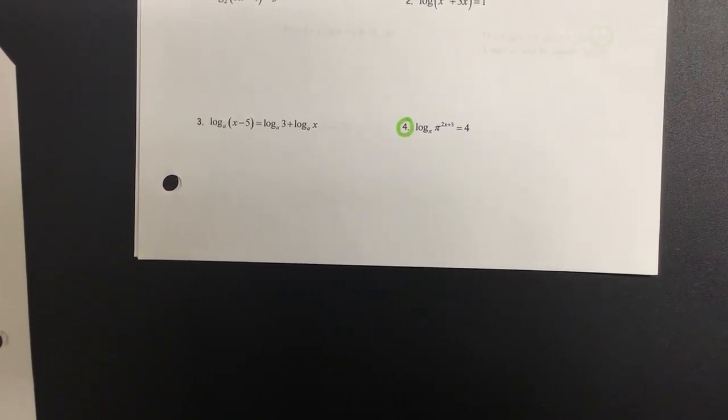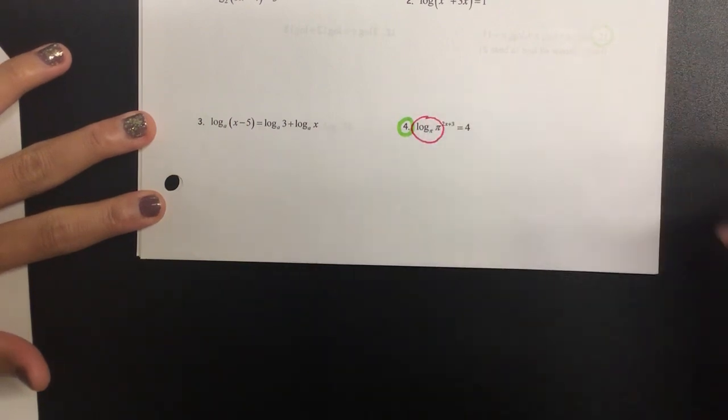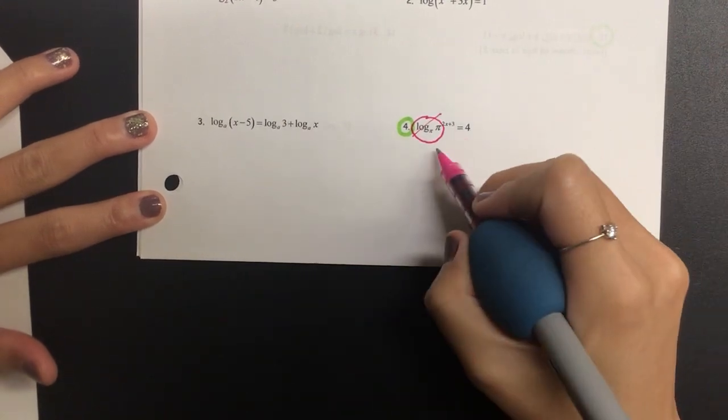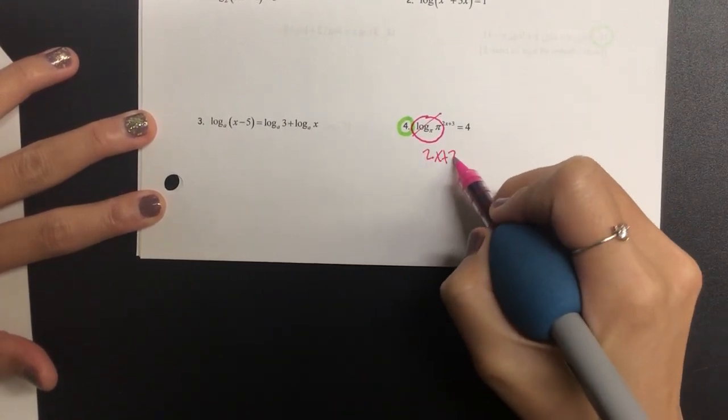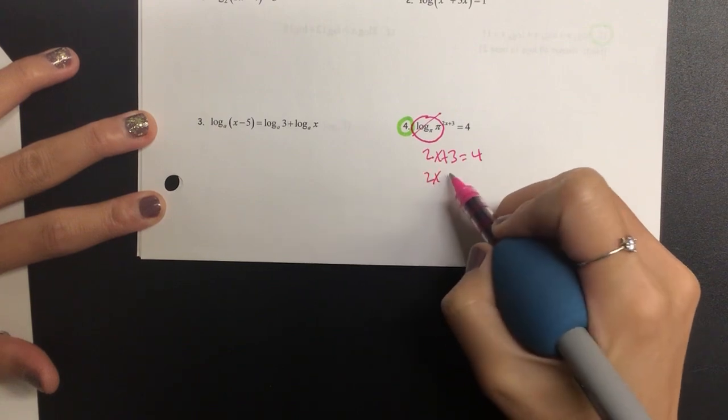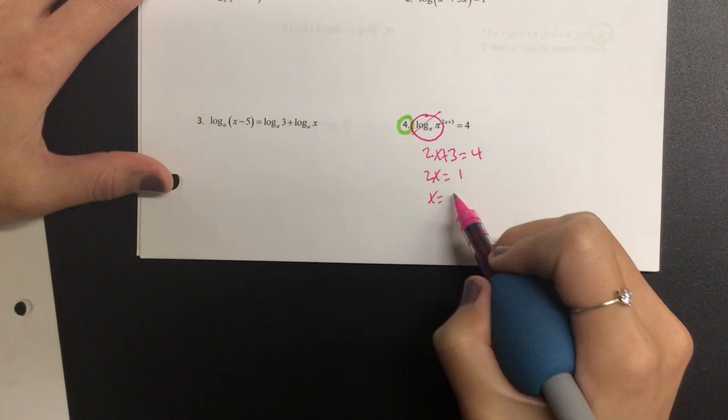Okay, I'm going to show you this problem in two different ways. One with the shortcut and then the traditional way. When you have a log with a big number and a little number, as in big pi and little pi, they cancel each other out and you get 2x plus 3 is equal to 4. Then we have 2x is equal to 1, so x will be one half.